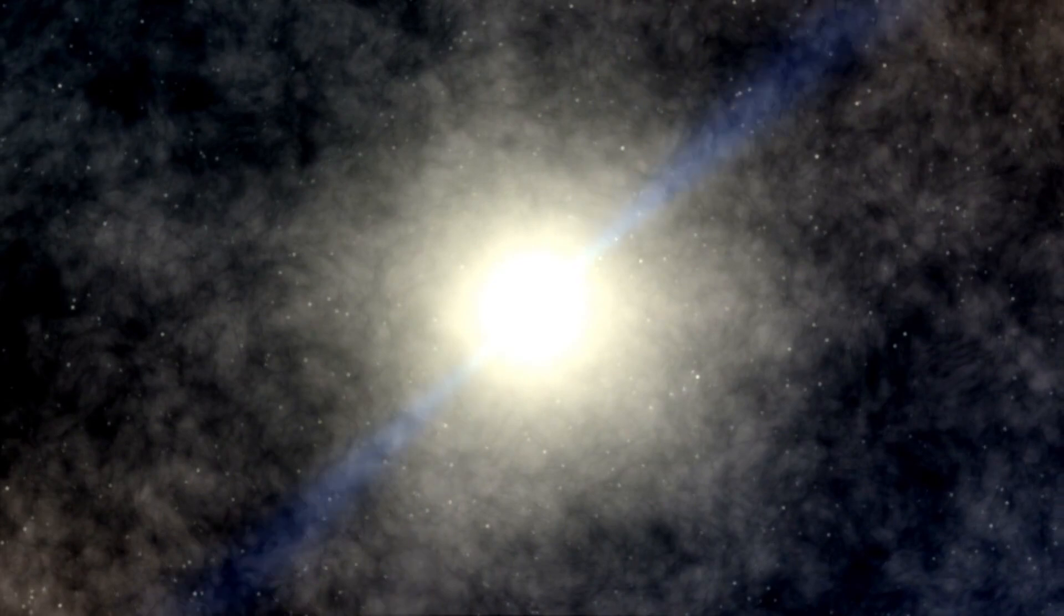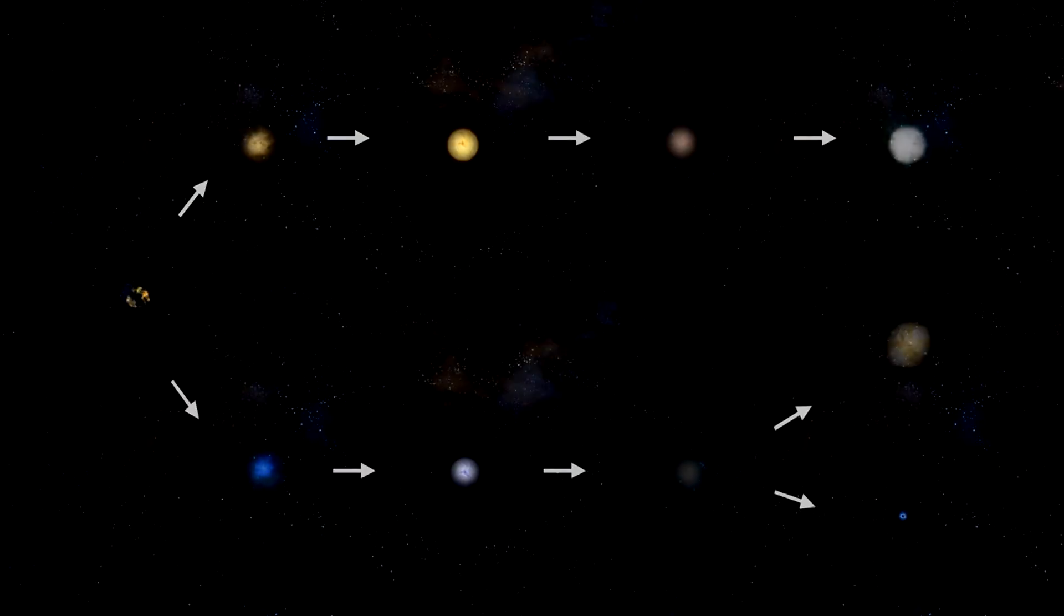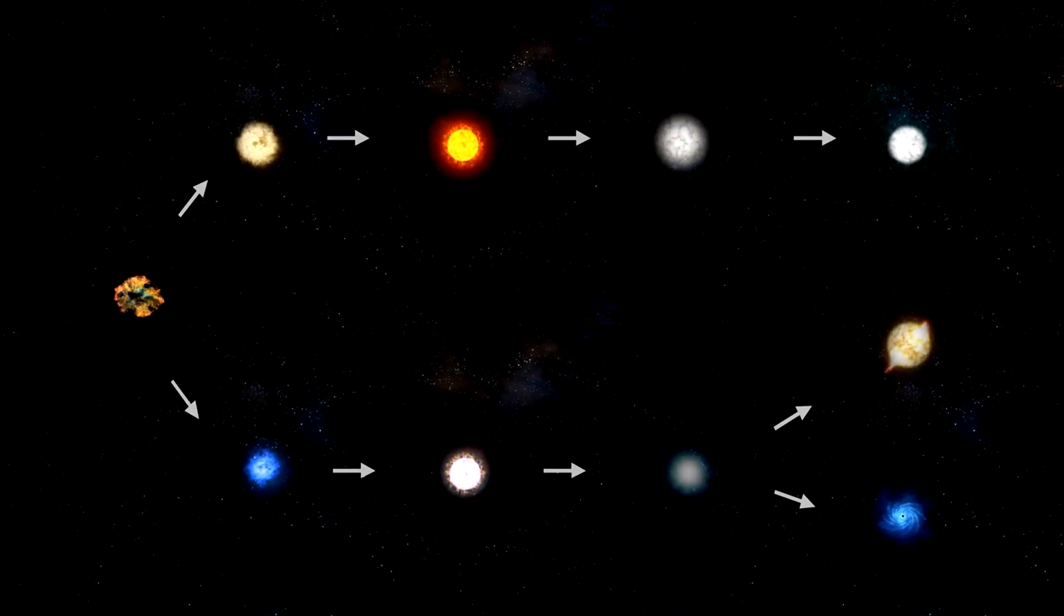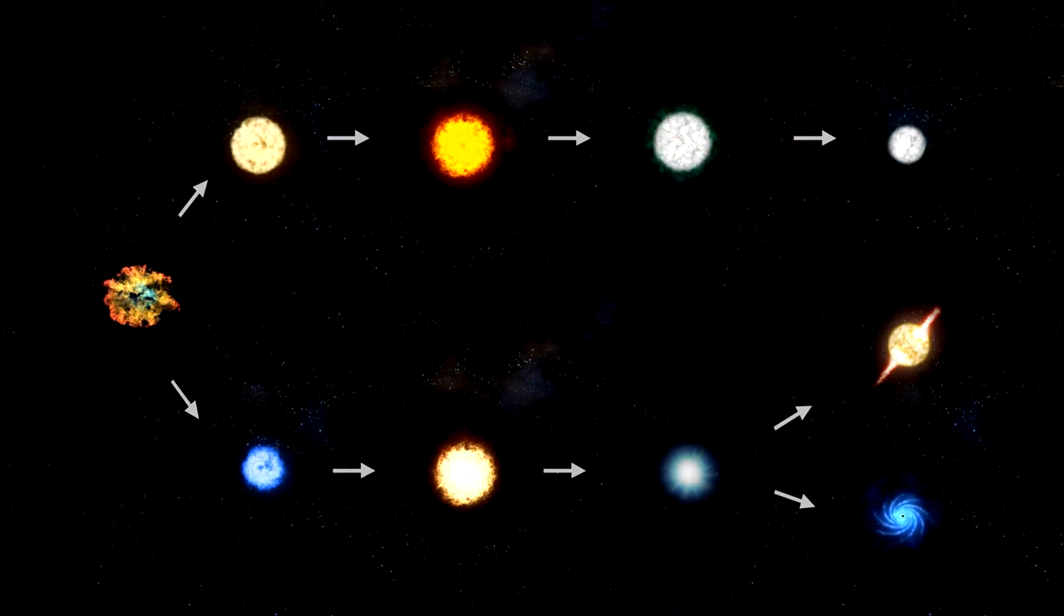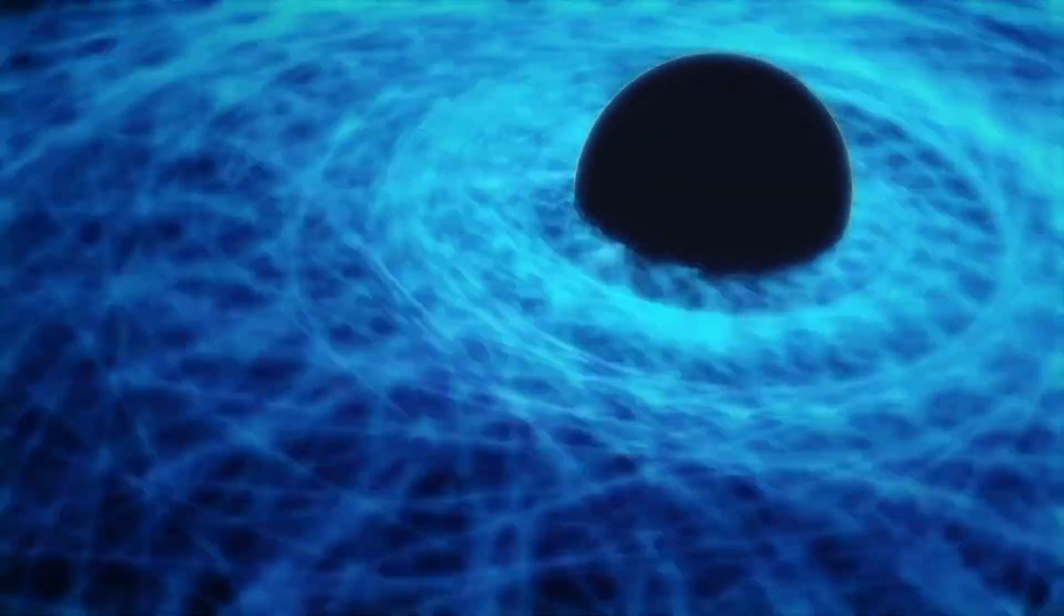On the other hand, if the core of Betelgeuse retains more than about 2.16 times the mass of the sun, it will likely collapse into a black hole. Black holes are regions of space where gravity is so intense that nothing, not even light, can escape from them. The core's mass is sufficient to overcome all other forces and continue collapsing indefinitely.